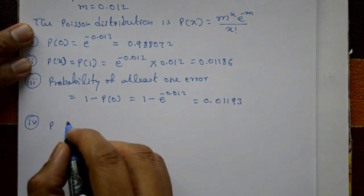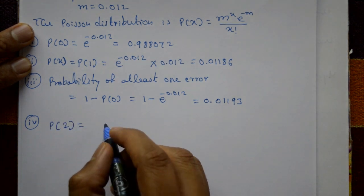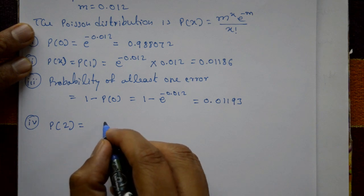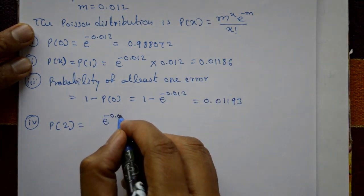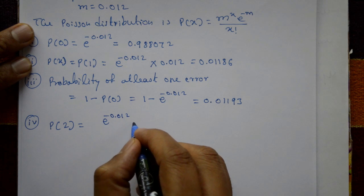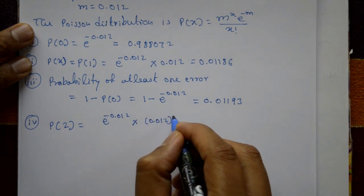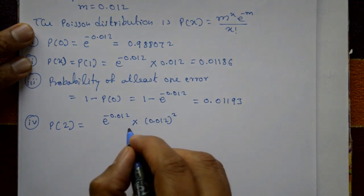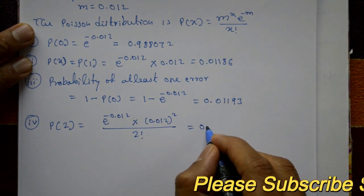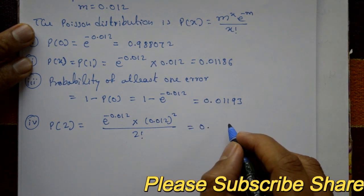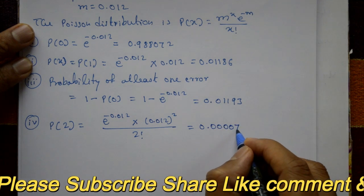Case 4: two errors. Probability of 2 errors means x equal to 2. P(2) equals e raised to minus m times m squared divided by 2 factorial, which is e raised to minus 0.012 times 0.012 squared divided by 2 factorial. This equals 0.0000071.